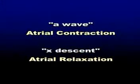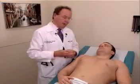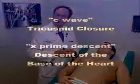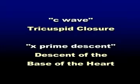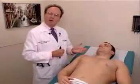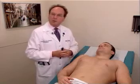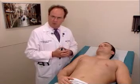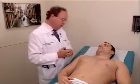The A wave is related to atrial contraction. The X descent is the relaxation of the atria. The C wave is closure of the tricuspid valve. The X' descent is descent to the base of the heart. The V wave is atrial filling, which culminates with the Y descent, when the tricuspid valve opens. Any abnormality of the valves, compliance of the valves, or of the ventricle will give you an abnormality of these particular waveforms, so they are really very important to evaluate.